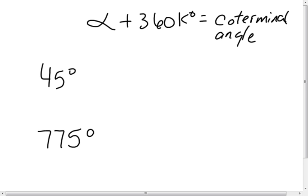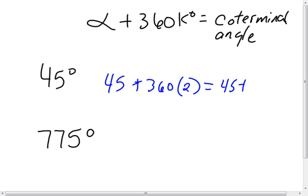We have a formula for finding coterminal angles: the standard angle plus 360 times k equals the coterminal angle, where k is the number of revolutions. We can use this to find a coterminal angle or work backwards to find the standard angle. For the first example, let's find the second positive coterminal angle of 45 degrees. With k equals 2: 45 plus 360 times 2 equals 45 plus 720, so the second positive coterminal angle is 765 degrees.